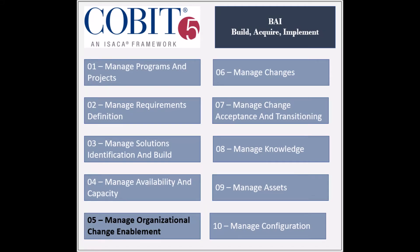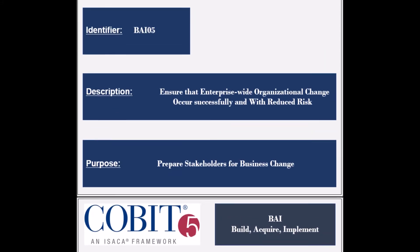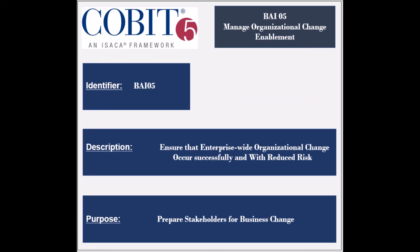The fifth process of the Build, Acquire and Implement domain is called Manage Organizational Change Enablement. The identifier of the process is BAI5.